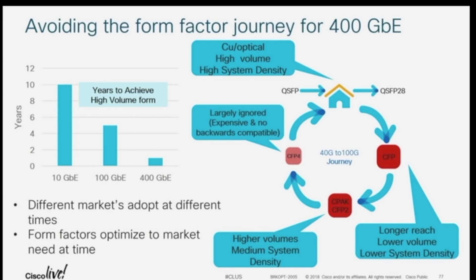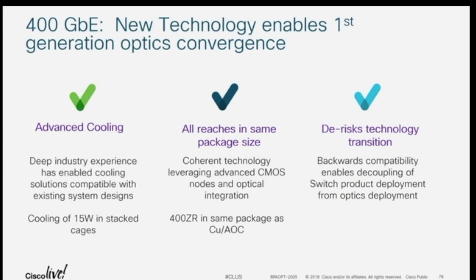Getting 400 gig optics into any kind of pluggable is all about cooling. We can figure out how to integrate silicon photonics and get the lane count down — we have to do all of those things to fit fewer components in there. Then you've got to figure out how to cool this thing. Typically we talk about pluggable optics in the 3.5 to 5 watt range — we're talking about 15 watts now. Getting all the technology into that package is hard, especially for long haul. All those coherent DSPs — at 400 gig, we are now able to fit that in the same module day one. The seven nanometer technology — we can get all that in.